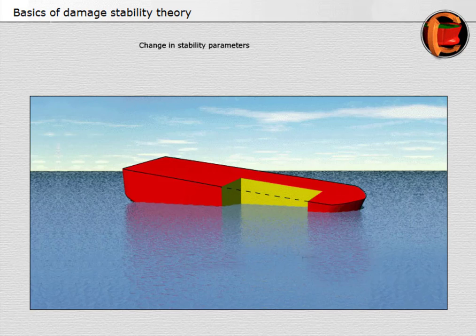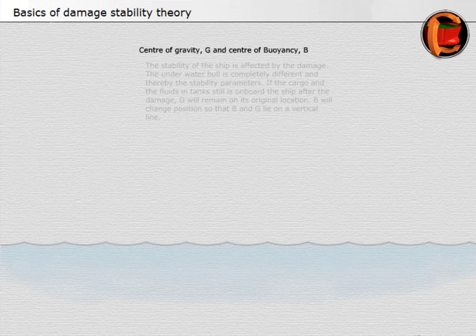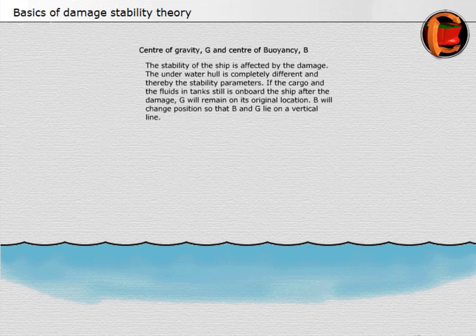Change in stability parameters: the sea treats the hull of the damaged ship as if the damaged compartments were non-existent. The stability of the ship is affected by the damage, as the underwater hull is completely different. If the cargo and the fluids in tanks are still on board the ship after the damage, G will remain in its original location, and B will change position so that B and G lie on a vertical line.